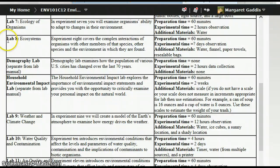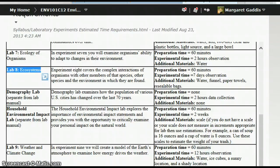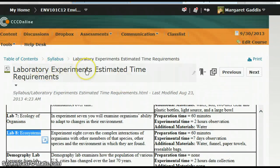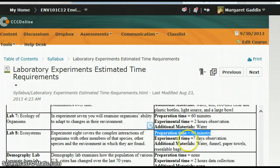Let's talk about Lab 8 for a second. So another lab that is due soon, although I did extend this deadline, is the ecosystems lab. So here I am consulting this laboratory experiments estimated time requirements page again. So this lab should take you about 10 minutes to set up, but you need 7 days of observation. So this lab is currently due on October 5th. That means you need to set this up today.